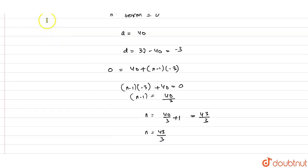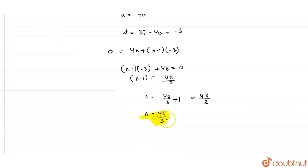And n equals 43 by 3 is not a natural number, which means 0 is not the term of this series. Thank you.